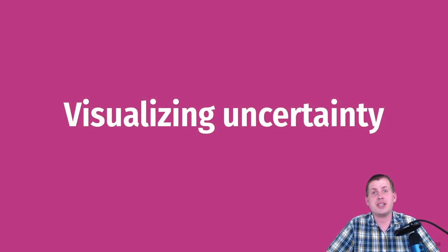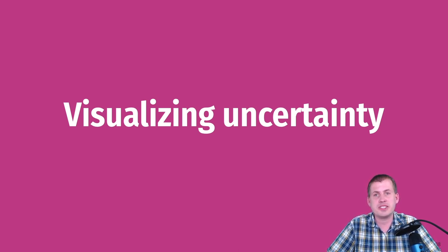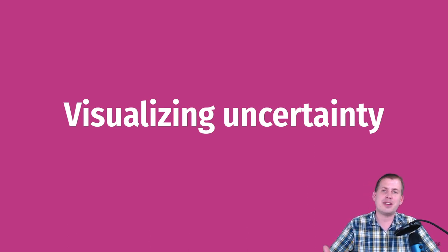We just talked about why it's important to try to communicate uncertainty. For the second half of the session we'll talk about how you actually do that in some standard graph types we can use to communicate that uncertainty.